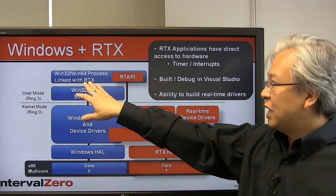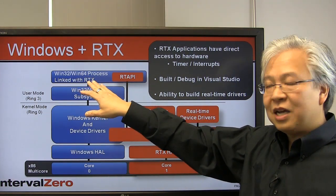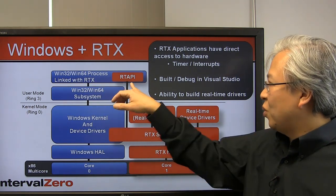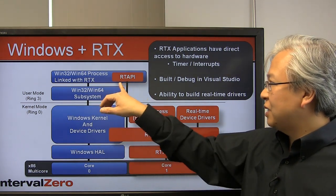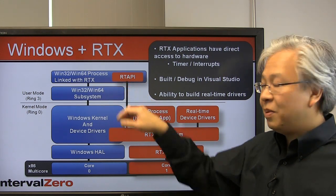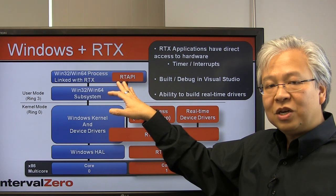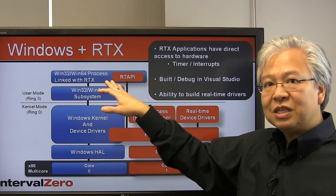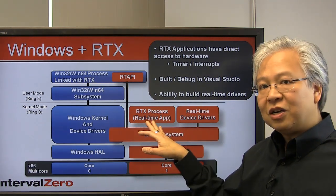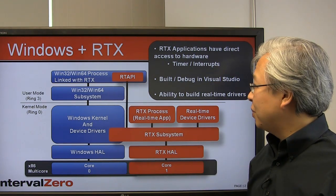If you're building a Win32-type application, you may wonder how to link it to the real-time app. We extend an API set called RTAPI — Real-Time API — and extend many function calls up into the Windows space. This is how you link your Windows application to the RTX application, and you'll use it for synchronization, for example.